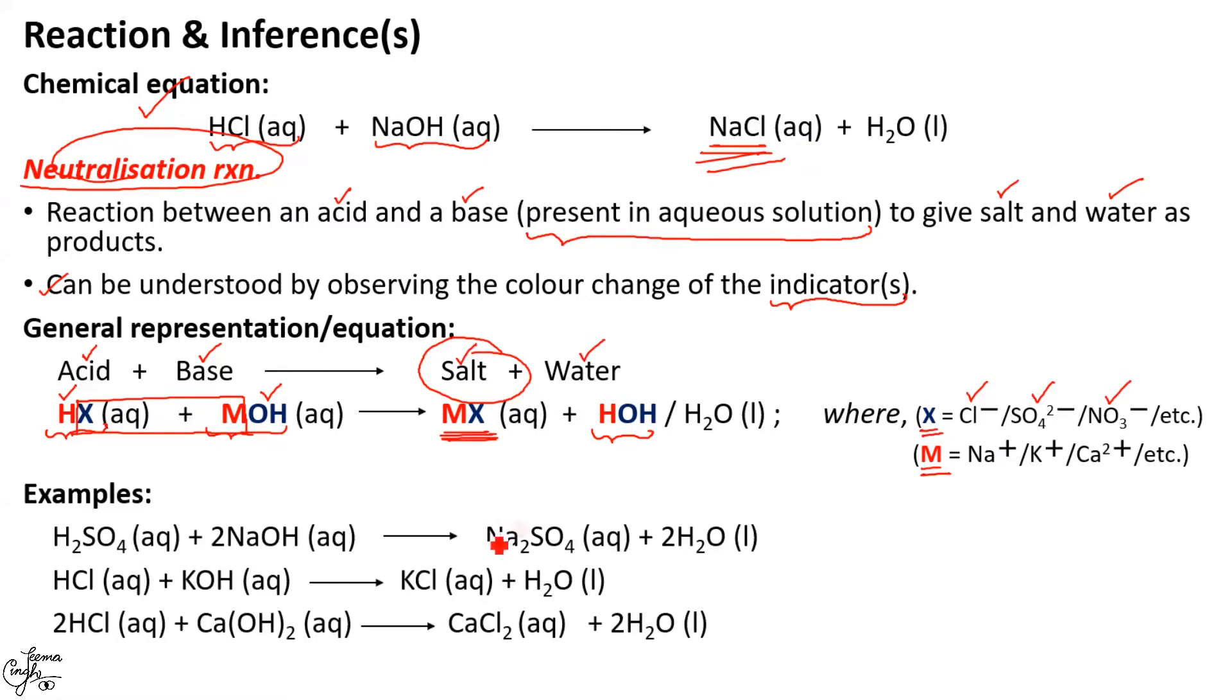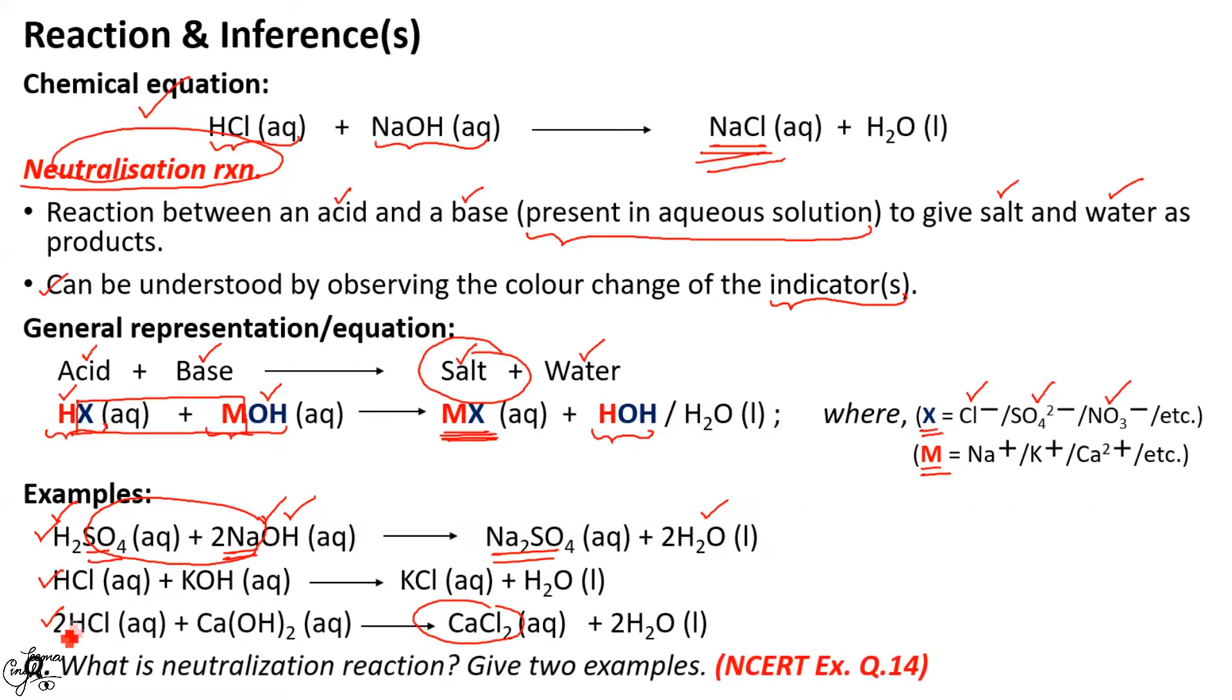Taking up some more examples. We see here, sulfuric acid react with sodium hydroxide. So metal M that is sodium from here and anion sulfate from here, they combine together and the resultant salt is sodium sulfate. And H and OH combine together to give rise to water. Children remember to balance the equation. Similarly, you can see the example of HCl with KOH giving rise to potassium chloride plus water and hydrochloric acid and calcium hydroxide giving rise to calcium chloride and water. I am sure you will be able to answer this question easily which says that what is neutralization reaction give two examples. So this is the definition of neutralization reaction you can give any two examples.